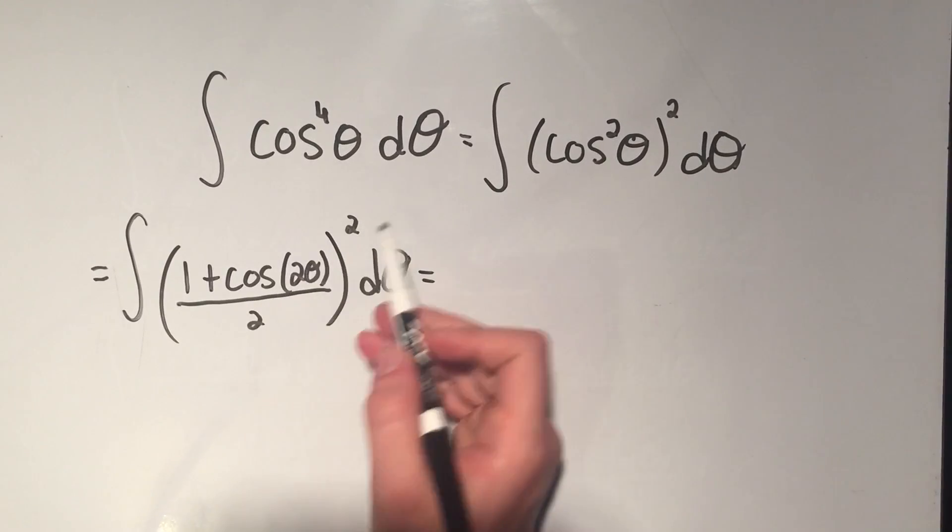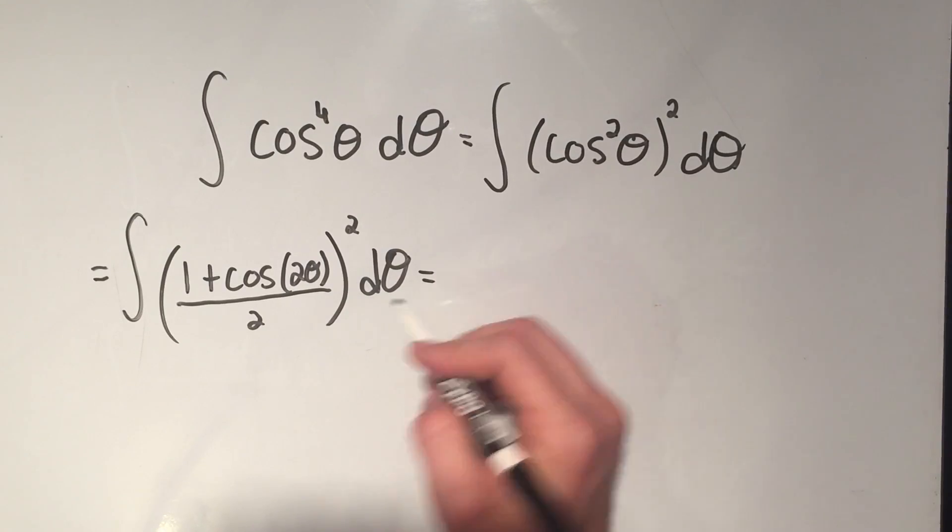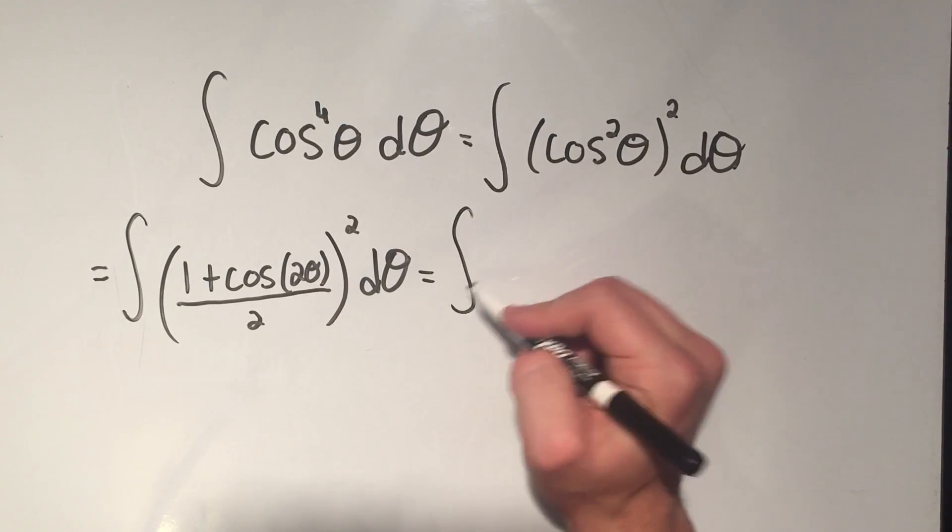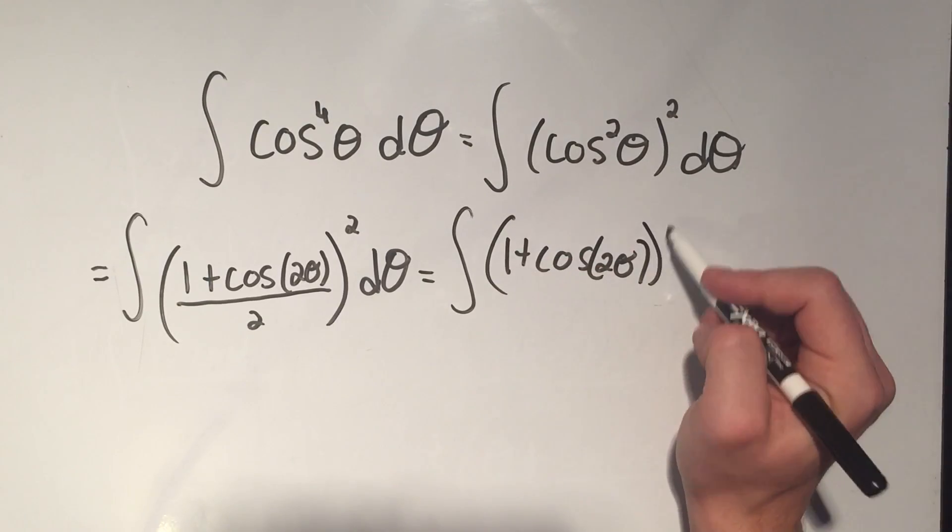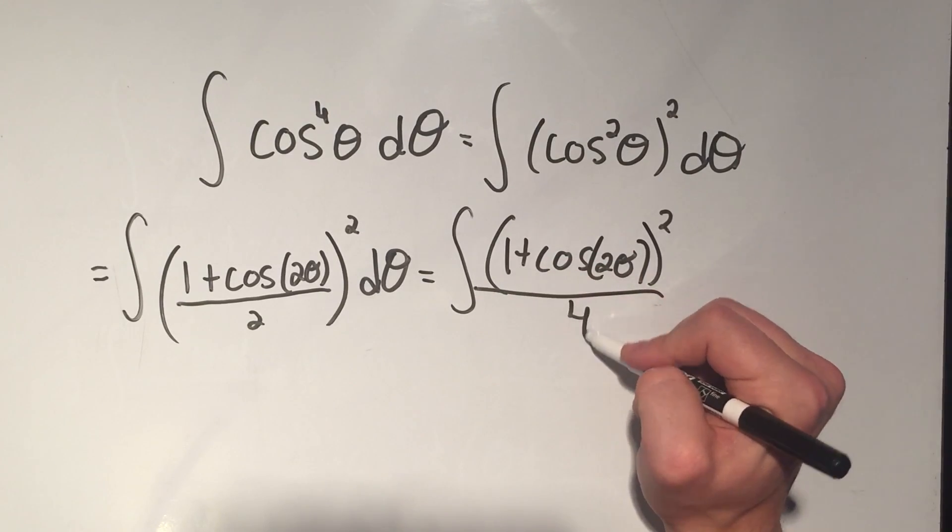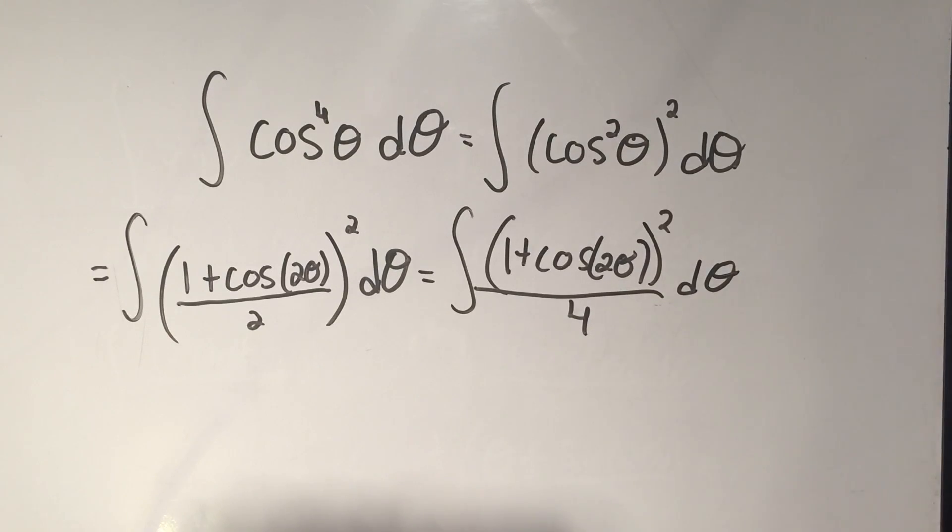And if I now distribute this exponent, that's going to be 1 plus cosine 2 theta squared over 2 squared is 4 d theta.